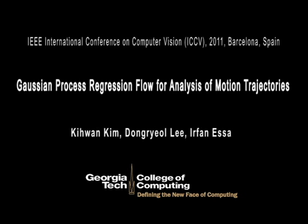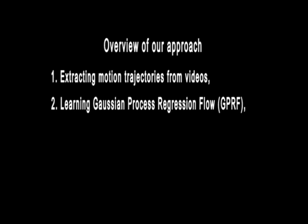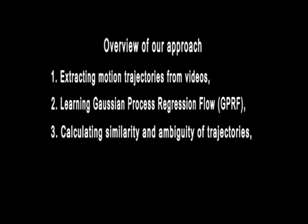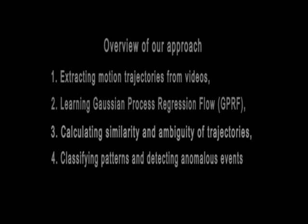In this paper, we propose a novel representation of motion trajectories using Gaussian process regression. We start with motion trajectories extracted from video, then learn patterns using Gaussian process regression. We calculate similarities between input trajectories and learned patterns as well as ambiguities of the motions. Based on these, we classify trajectories and detect anomalies.